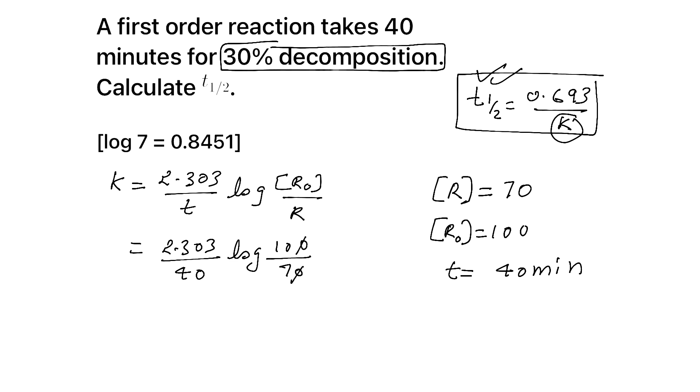0, 0 cut. So what are you getting? 2.303 by 40 log 10 by 7 is what? Log A by B is equal to log A minus log B. Correct? So log 10 minus log 7. Correct? Now, 2.303 by 40. You will be getting like 0.57.